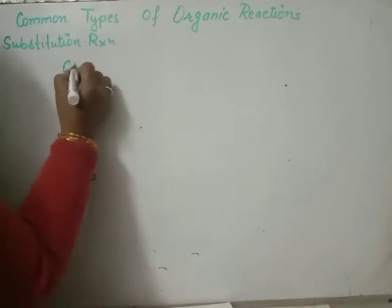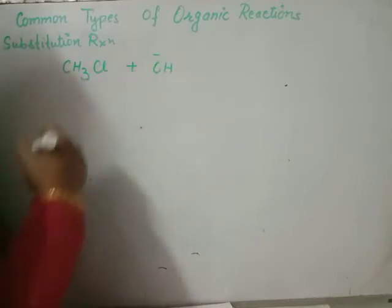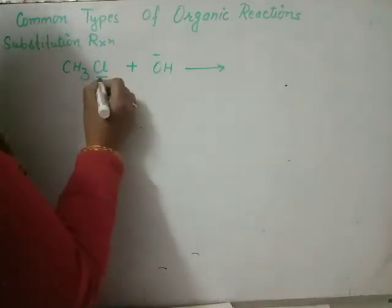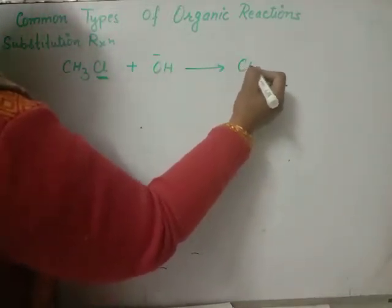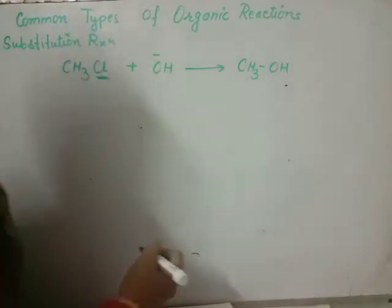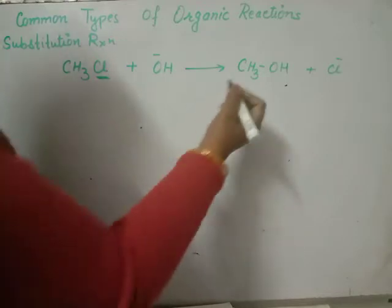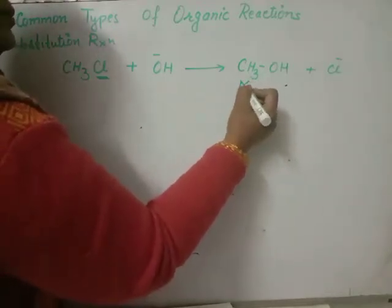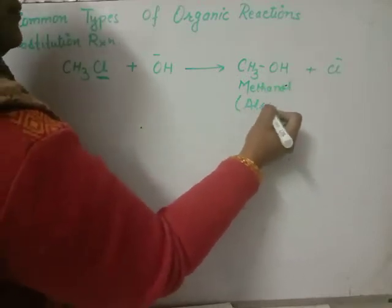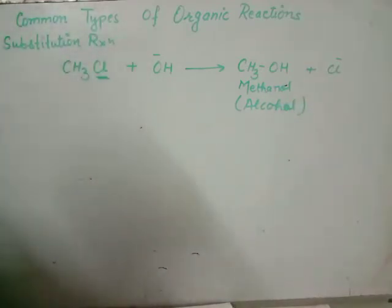For example, we have chloromethane. This chloromethane is reacted with the nucleophile hydroxide. Hydroxide is more reactive than chlorine, so it replaces chlorine. The remaining part remains undisturbed. In place of chlorine, we have OH, and chlorine is released as a negative ion. This product is better known as methanol. So from a halogen compound, we prepare alcohol. This is the substitution reaction.